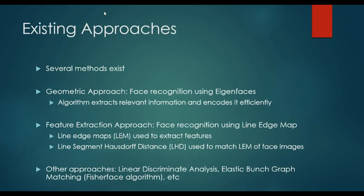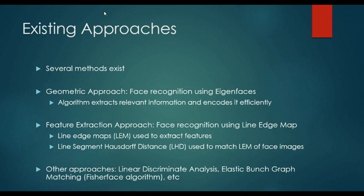There are several approaches to facial detection and facial recognition. The first is the geometric approach using eigenfaces. The algorithm extracts relevant information, encodes it efficiently, and compares it to a database of images. Another method is the feature extraction approach using the line edge map, which uses the Sobel filter to determine the edges in a person's face in order to identify different features such as the eyebrows, the nose, the lips, and the eyeballs, and compare them with the database of images.